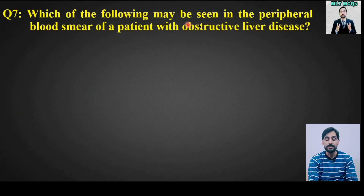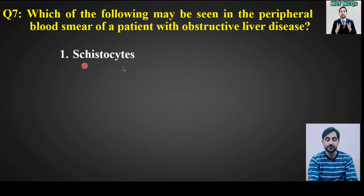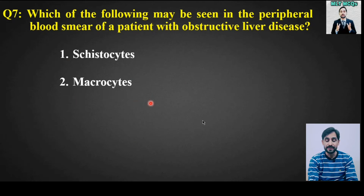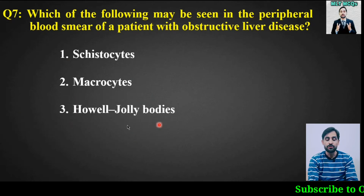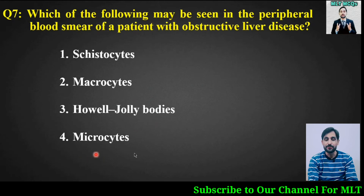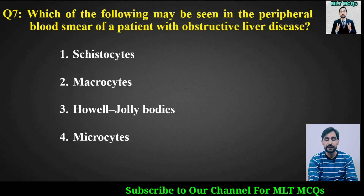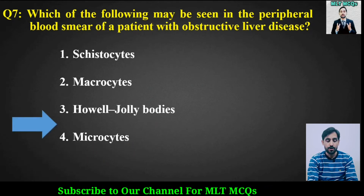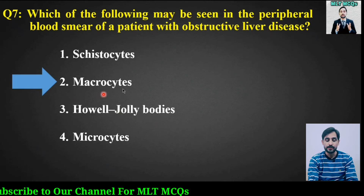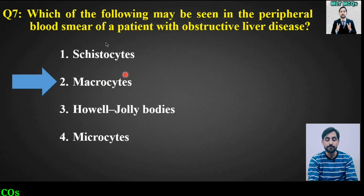MCQ number 7: Which of the following may be seen in the peripheral blood smear of a patient with obstructive liver disease? Options are schistocytes, macrocytes, Howell-Jolly bodies, or microcytes. The right answer is option number 2: macrocytes will be seen in the blood smear of a patient with obstructive liver disease.